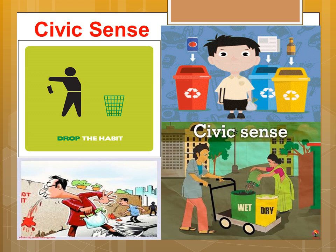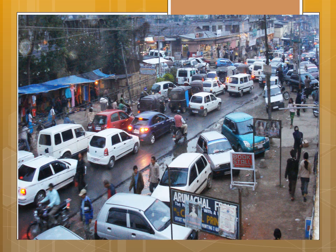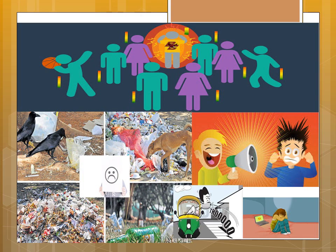The understanding of how to conduct oneself in public is called civic sense. Civic sense is very important for the progress and well-being of the society. Many a times, when we step outside our homes, we see people littering or spitting on the roads or in public places. These actions cause discomfort to others and also make the surroundings unclean. This shows a lack of civic sense in those people.